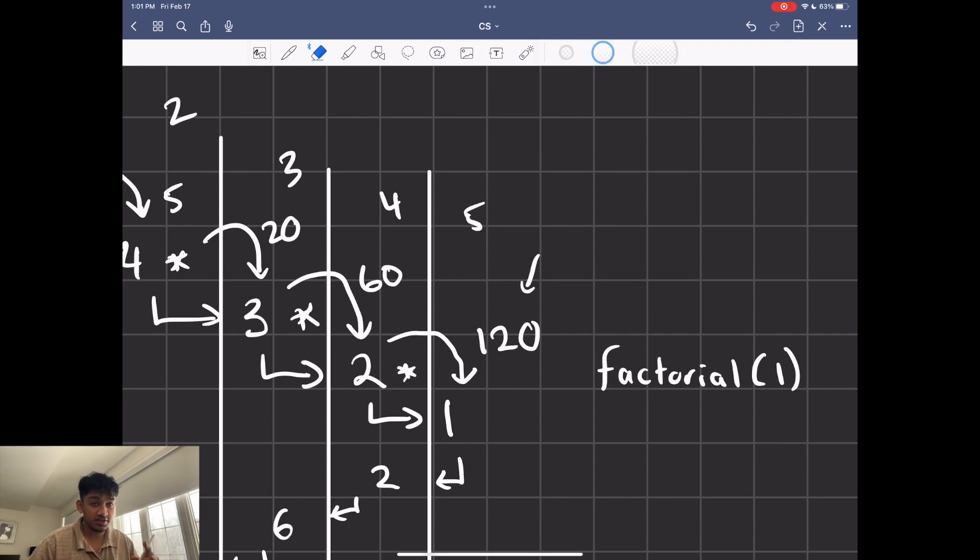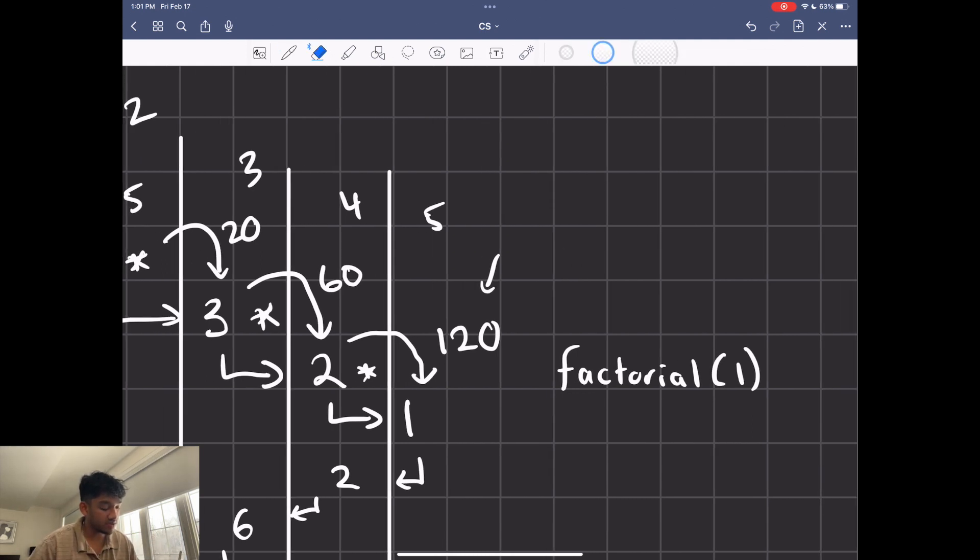So we need to modify the function to have another argument to save this accumulator that we're creating. This value that we're carrying is called the accumulator. So what we want to do is pass in another argument for this accumulator. So we can multiply it right away and then just return that without having to multiply again and again and again.